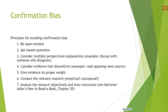Three, consider multiple perspectives or explanations. For example, discuss an issue with someone you disagree with — do it in a civil way. If you're a Republican, make a friend who's a Democrat, keep it civil, truly be their friend, and ask why Democrats hold to such and such position. Then really listen to their explanation. Four, consider evidence that disconfirms your hypothesis — for example, reading opposing news sources.